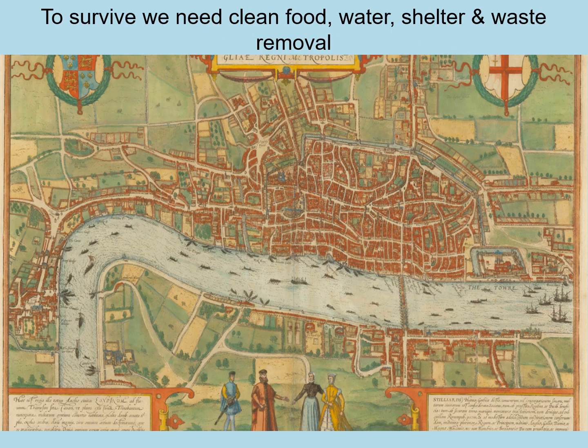In order to survive we need clean food, water, shelter, and waste removal. A baby needs clean food that is nutritious and free of illness, and water free of pathogens so it doesn't get ill. It needs shelter and warmth to keep it safe and healthy, and waste removal — so a baby would need its nappy regularly changed and being bathed. Let's think about that on a wider scale in terms of populations.